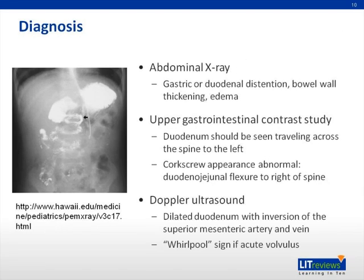A Doppler ultrasound can also be performed. This will demonstrate a dilated duodenum with inversion of the superior mesenteric artery and vein. If you see a whirlpool sign, this indicates acute volvulus.